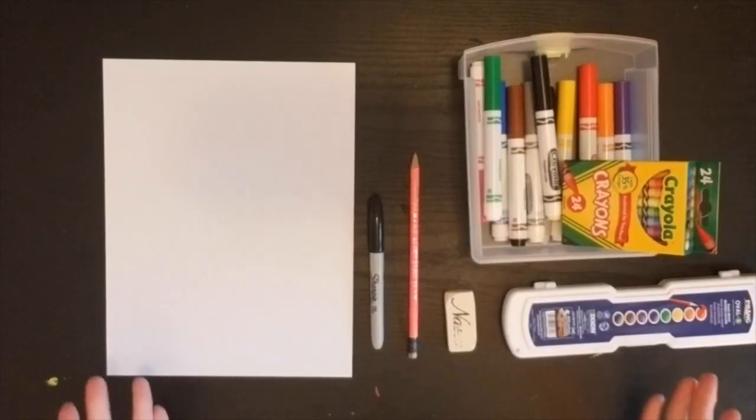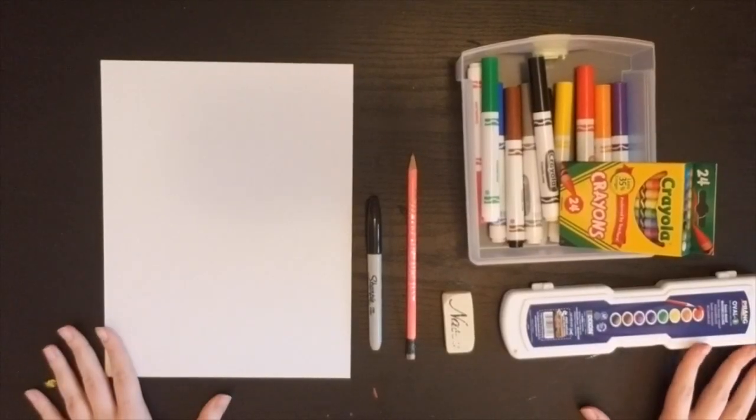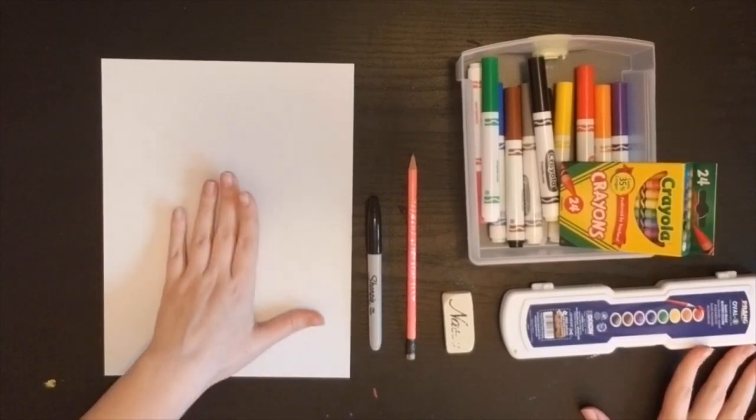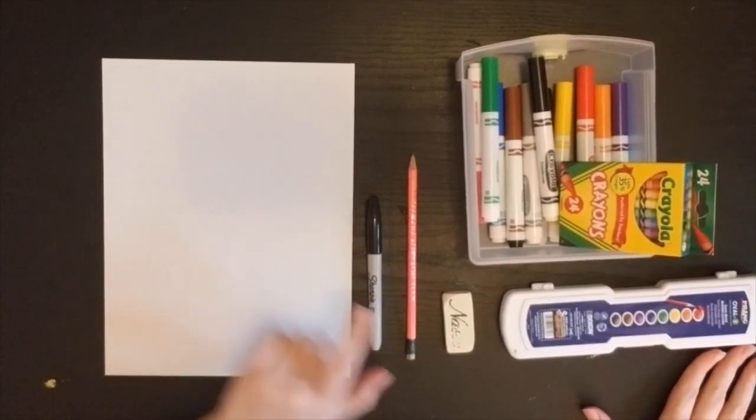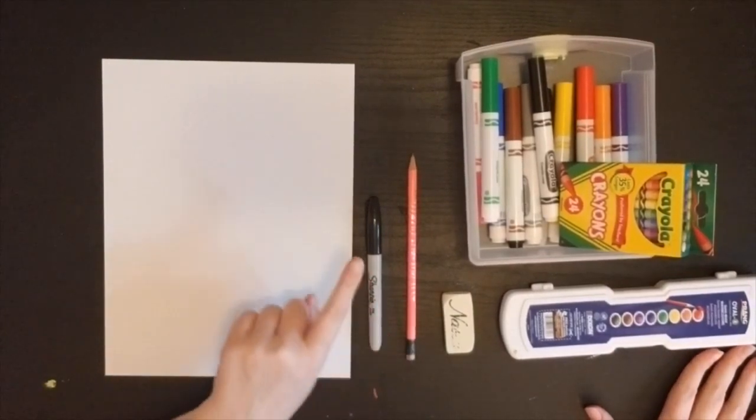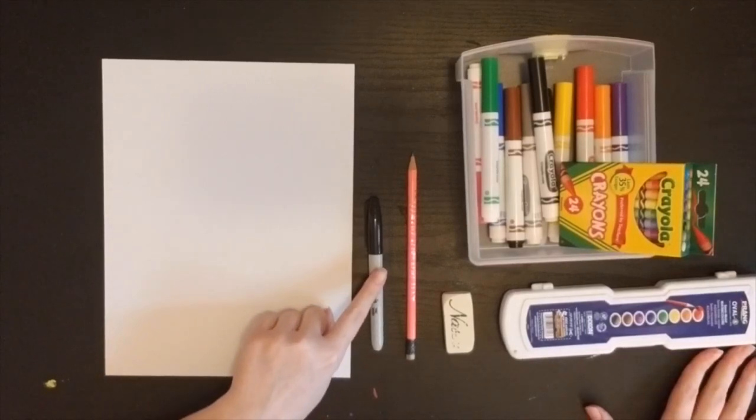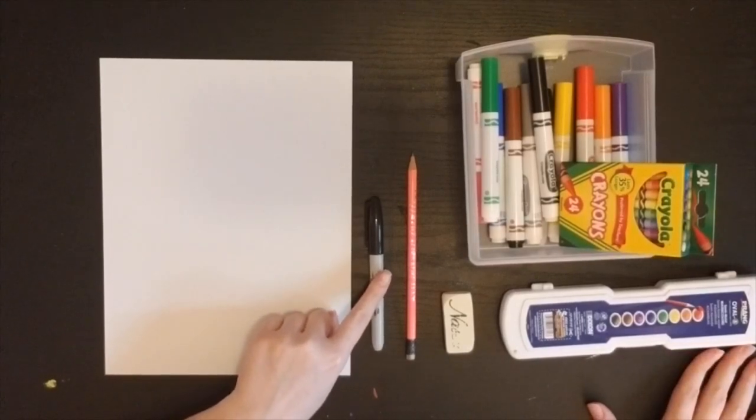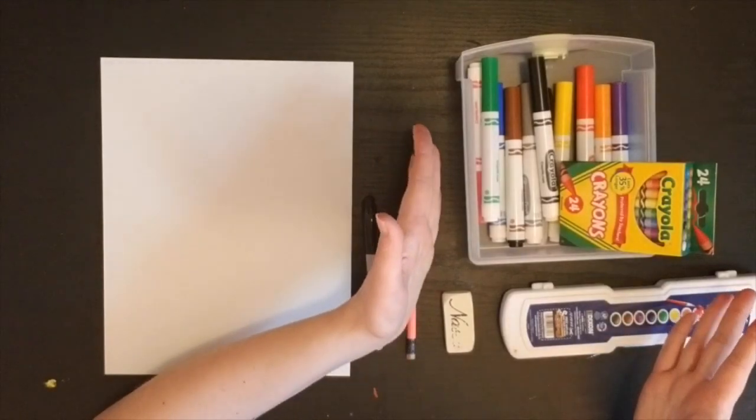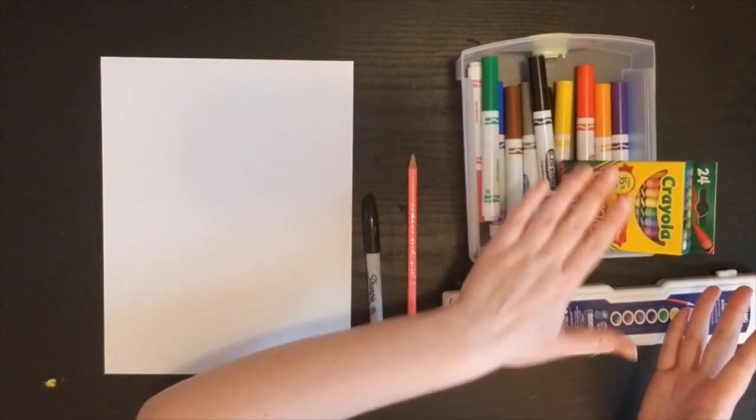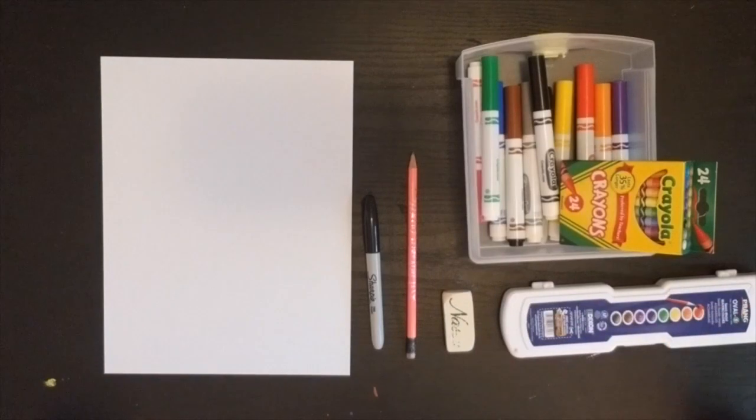All right, my amazing artists, here's what we're going to need to design our own dream birthday cake. We're going to need at least one sheet of white paper, our pencil and eraser to help us draw. You might want a Sharpie to help you trace the really important details. And then of course, we're going to need some sort of colors to help color our cake in, whether that might be markers, crayons, or paints if you have them at home. So please pause the video here and go grab the art supplies that you need to design your dream cake.